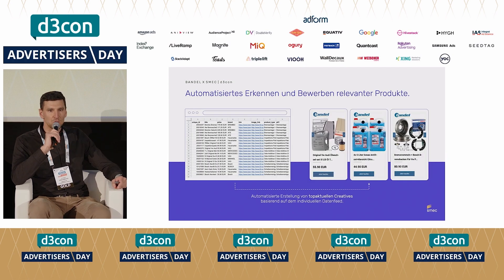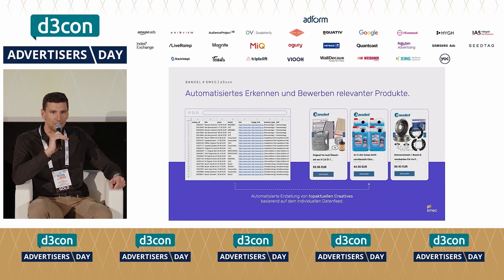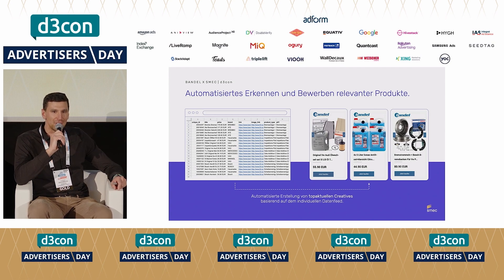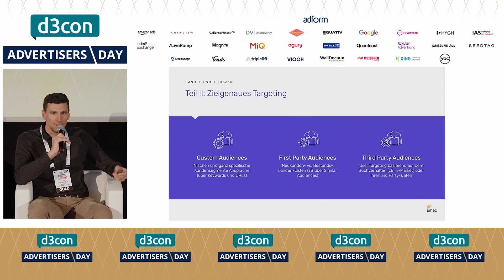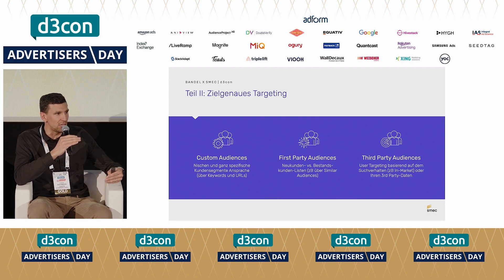Das sieht dann so aus: Wir haben einen Dynamic Feed mit verschiedenen Kategorien, wo unsere besten Produkte in der jeweiligen Kategorie ausgespielt werden. Der Banner ist auch dynamisch. Das sind die dynamischen Elemente, die da reinkommen. Dann kommt noch das jeweilige Targeting dazu.